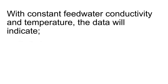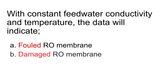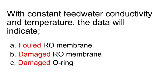If the feed water temperature and conductivity are constant, the data tells you the following. A higher feed water pressure indicates RO membrane fouling. A combination of lower feed water pressure and higher product conductivity indicates RO membrane damage. If the feed water pressure is relatively unchanged and the product conductivity is higher, internal O-rings are probably damaged.